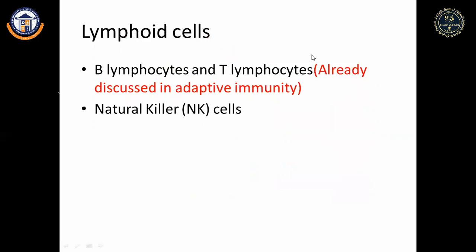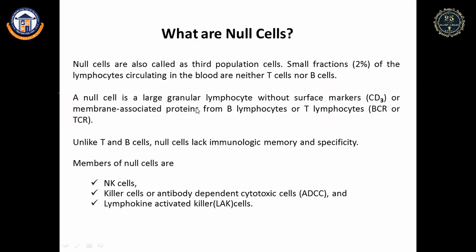Lymphoid cells include B lymphocytes and T lymphocytes. Natural killer (NK) cells, or null cells, are a third population present in smaller fractions in the blood — they are neither T cells nor B cells. Null cells lack immunologic memory and specificity, which T and B cells possess. Numbers of null cells include NK cells, killer cells (antibody-dependent cytotoxic cells), and lymphokine-activated killer cells.